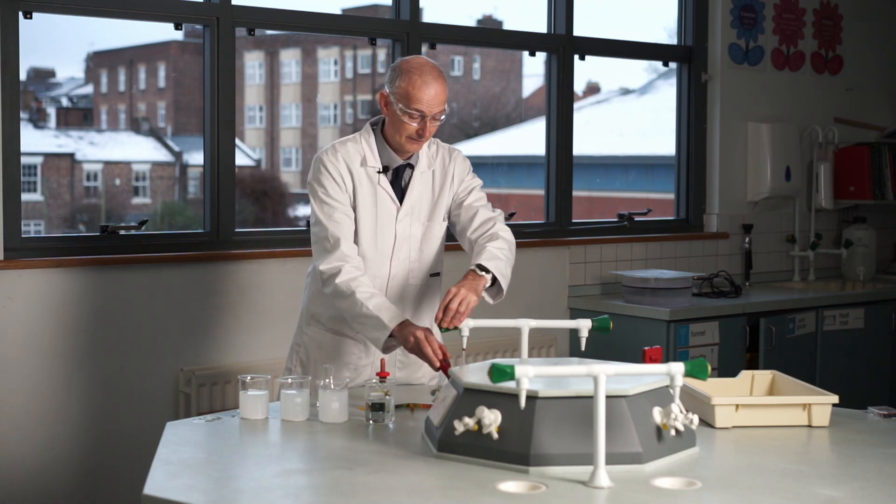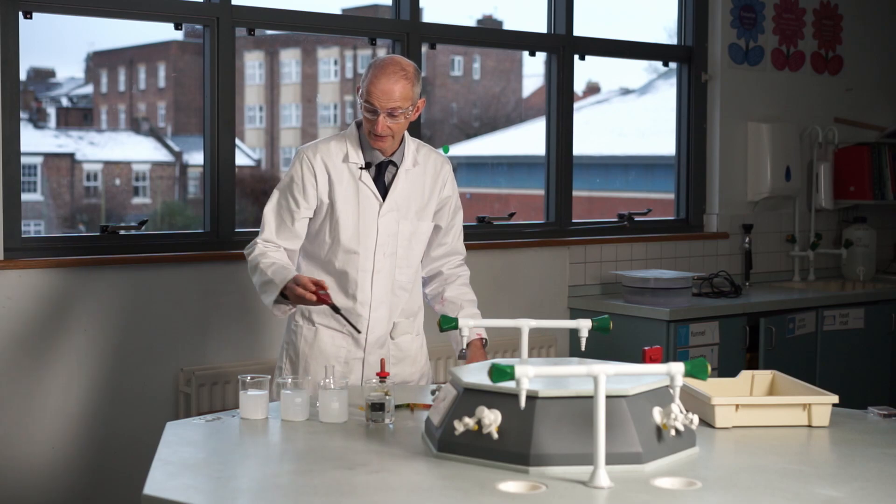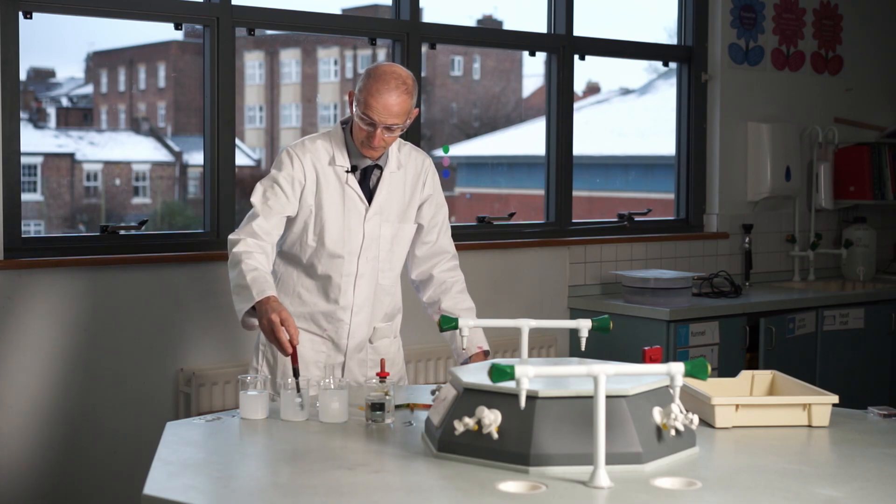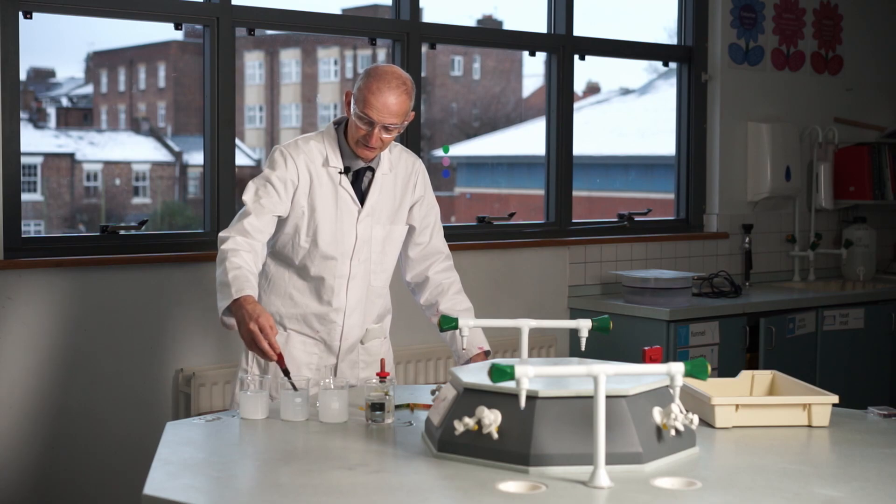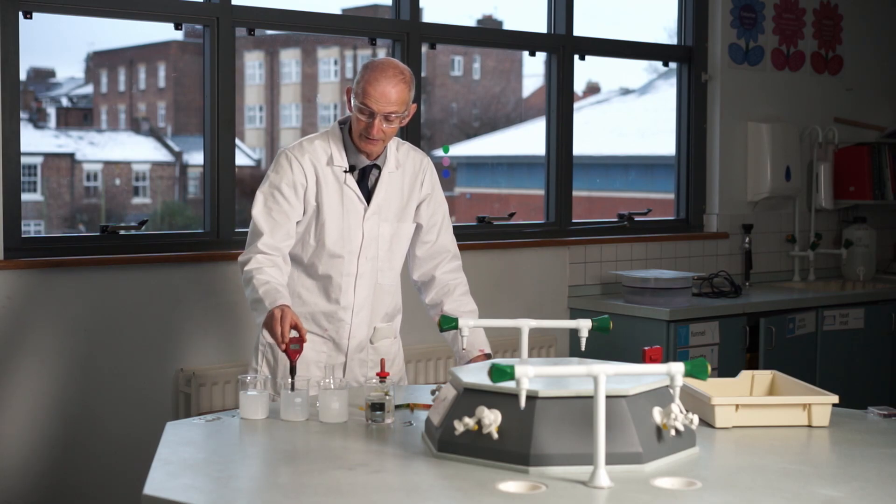Rinse it off. Try the next one. Magnesium oxide. So this is reading 9.6 on the scale. 9.6 pH units.